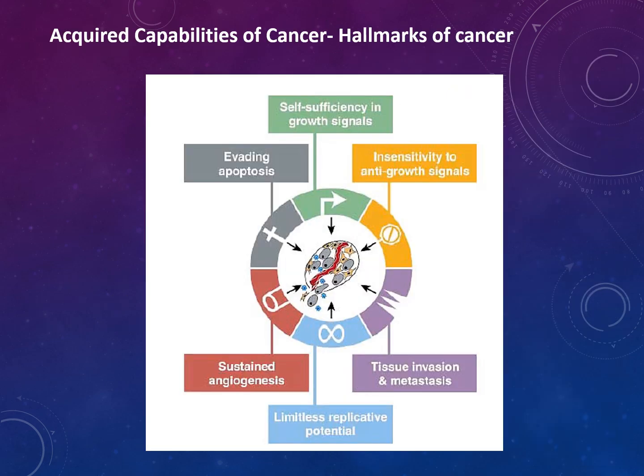These are the acquired capabilities of cancer: self-sufficiency in growth signals, evading apoptosis, insensitivity to anti-growth signals, sustained angiogenesis, tissue invasion and metastasis, and limitless replicative potential — meaning cells just keep dividing.